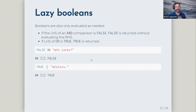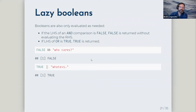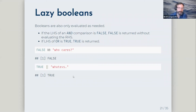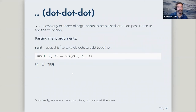Lazy boolean evaluation: booleans are also only evaluated as needed. If the left-hand side of an AND comparison is false, R doesn't bother with the right-hand side because it knows it can't return true. Similarly, if the left side of OR is true, it returns true immediately. You can use this to short-circuit: do the easy test first, because if it answers your question, R won't evaluate the expensive hard test.